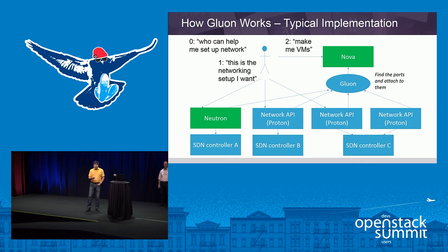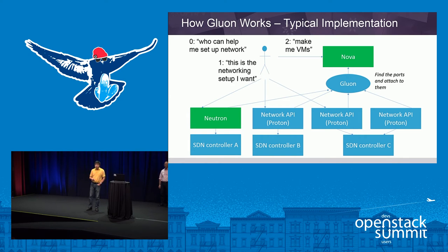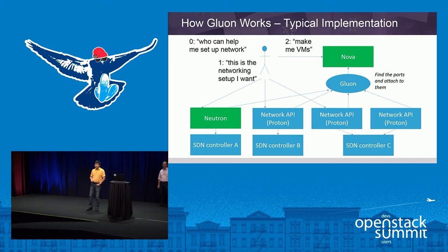We implemented a proof of concept four months ago at the OpenStack Summit. At that time, we implemented Gluon as a standalone server configured as a network API class. The Gluon server has logic to determine whether a port is from the Proton or from Neutron. If the port is from the Proton, it gives back the port binding request to the different network APIs in the Proton part. If it's a regular Neutron port, it passes to Neutron to handle it in the conventional way.